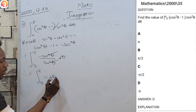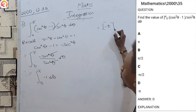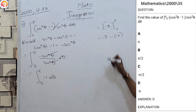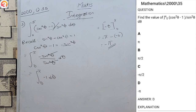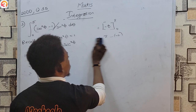Integrating −1 with respect to θ gives −θ, with limits π and 0. Substituting the upper limit: −π. Substituting the lower limit: −(0) = 0. Result: −π − 0 = −π. Checking the options, that is option D. The solving steps are very simple — but always recall that in calculus, as in many other topics in maths, we make use of trigonometry, and as such you must know trigonometry.